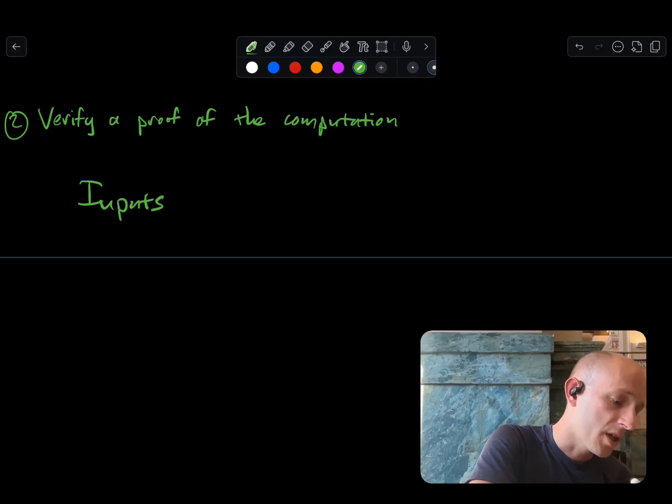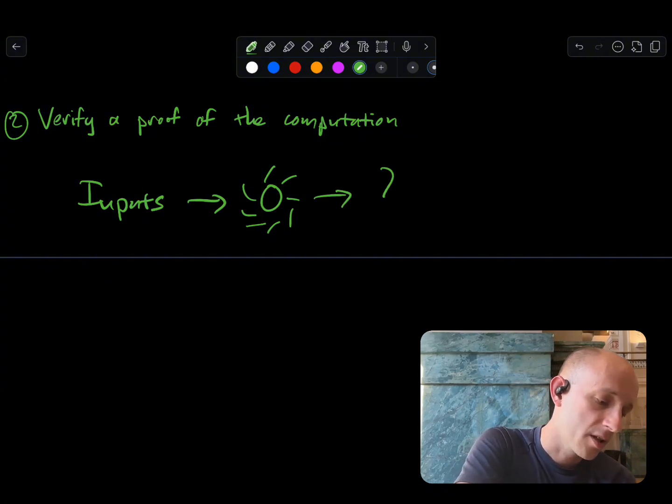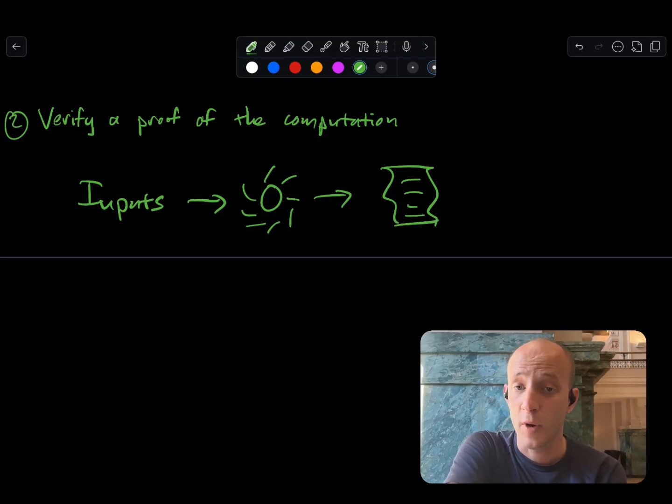We take the inputs to our computation and we generate the proof. We'll pretend that's a proof. We then take that proof and put it on-chain along with the script that checks to see if the proof is correct or not. And then we get a very simple output that lets us condition whether or not our transaction happens or doesn't happen. So there's some pros and cons to this.